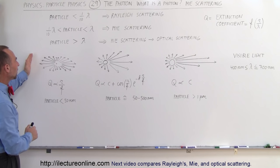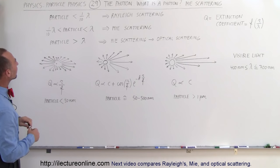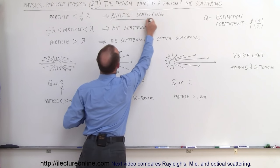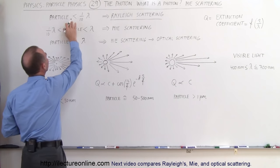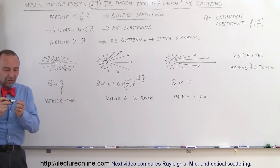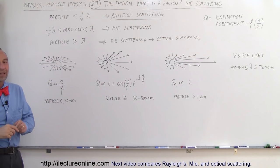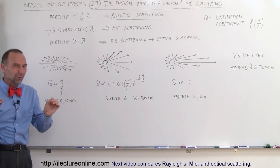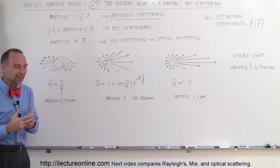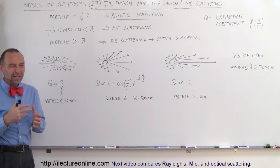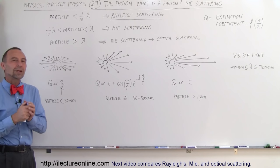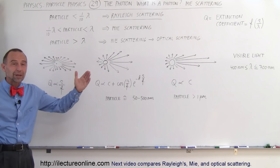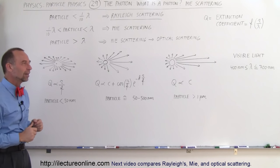The first type of scattering is what we call Rayleigh scattering, and I have it right here. Rayleigh scattering occurs when the particle is less than one-tenth the size of the photon — or at least the wavelength of the photon — because the size of a photon is still something we need to tackle. It is a difficult concept, and we really don't think about the size of a photon in a way where we can actually put a limit to how big a photon is.